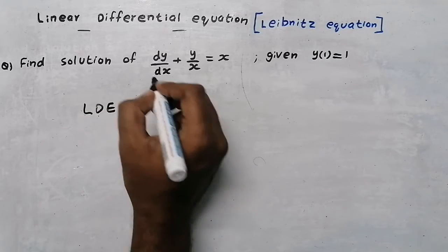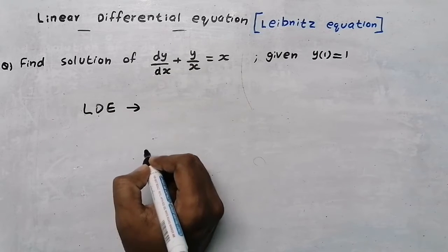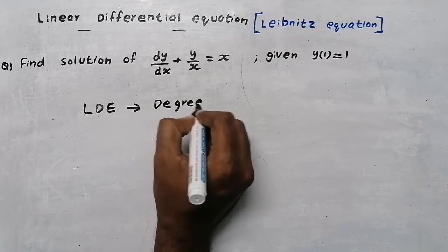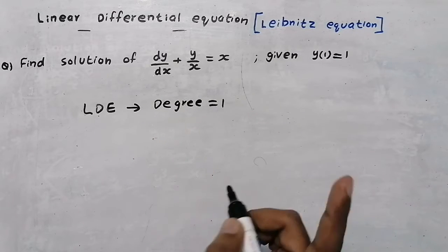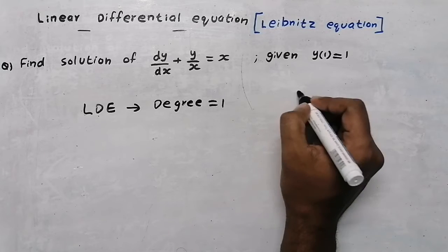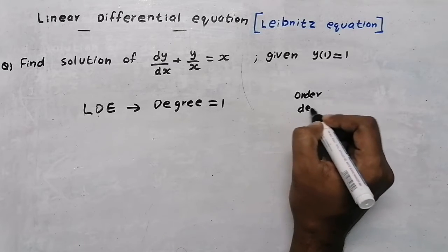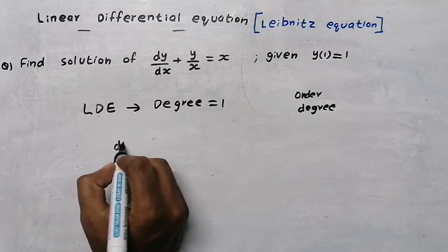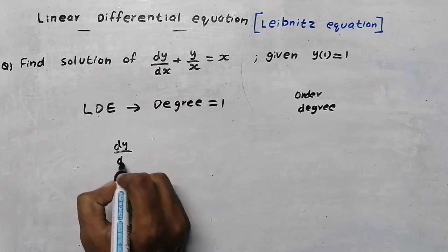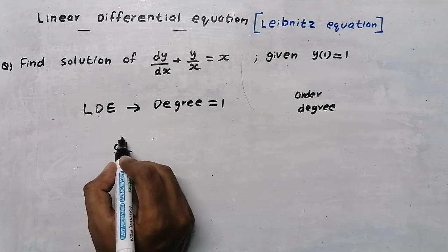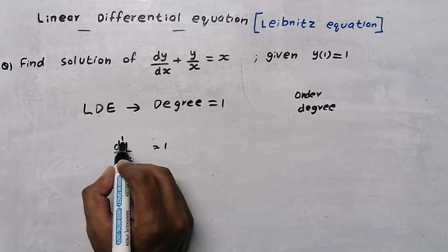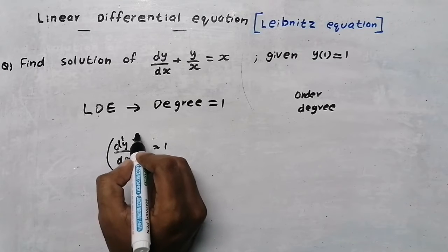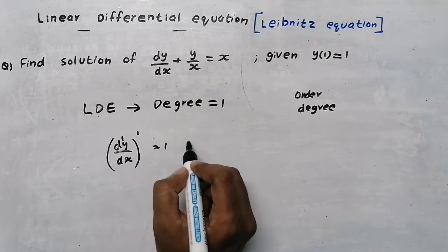How can we say that an equation is a linear differential equation? There are two conditions. The first condition is that the degree should be equal to one. For example, in the equation dy/dx, the order is one and the degree is also one — that is the power of the derivative.